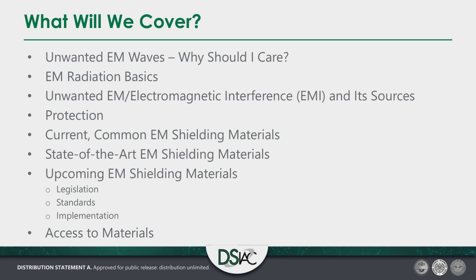Here's an overview of what we're going to cover: unwanted EM waves and why you should care; EM radiation basics; sources of these different types of EM waves; ways we can protect against them; common current shielding materials; state-of-the-art but available shielding materials; upcoming EM shield materials — the type of things we're doing R&D on now that we hope to see deployed in the next round of weapon systems for the military; and the ability to access these different materials, because just because we have something doesn't mean we have enough to deploy in mass quantities.